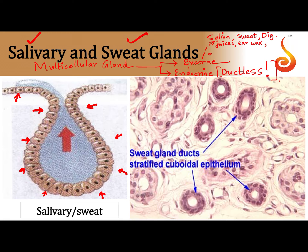Ear wax in your ear canal, called cerumen, milk, and the oil on your skin are also secreted by exocrine multicellular glands. What keeps them together is that they are made up of many cells which group together to form a gland. So the two types of glands are unicellular glands and multicellular glands.